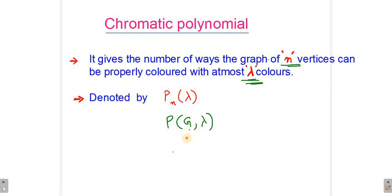Which is denoted by P(n, lambda) or P(G, lambda), where G is the graph and lambda is the number of colors. And here n is the number of vertices in the graph and lambda is the number of colors.